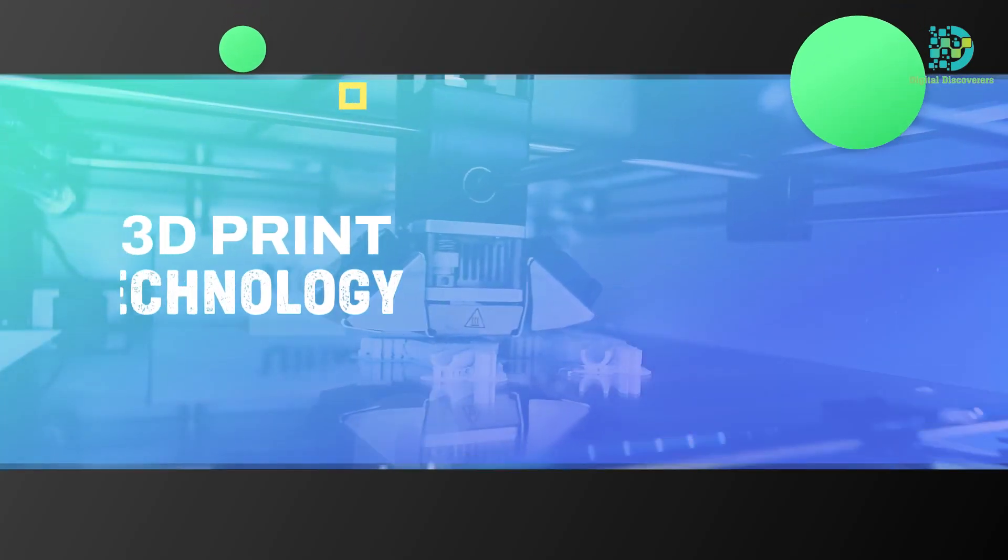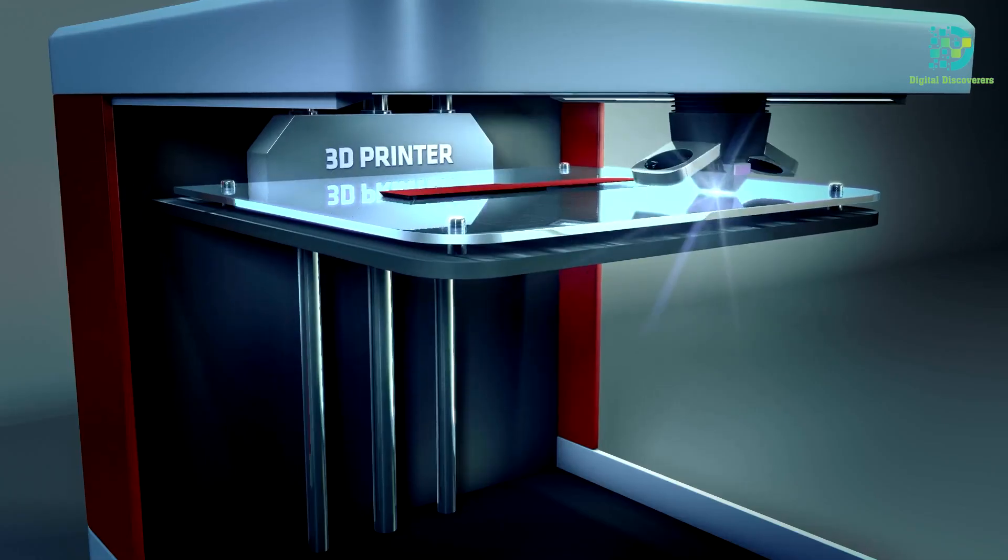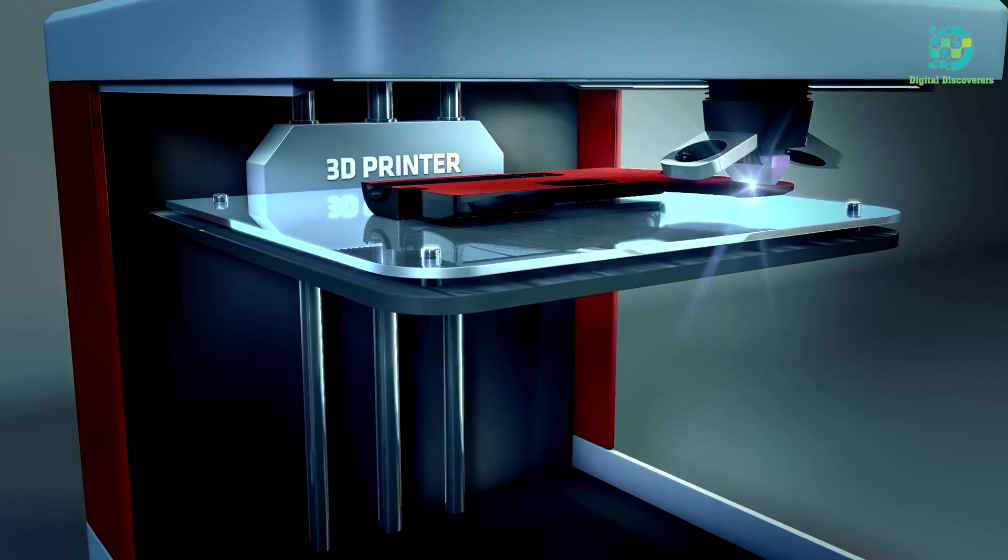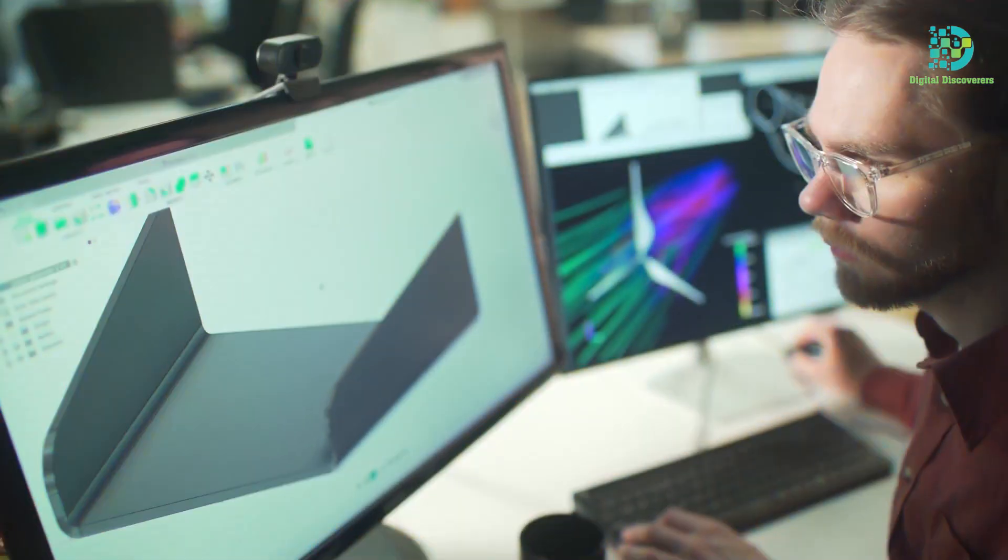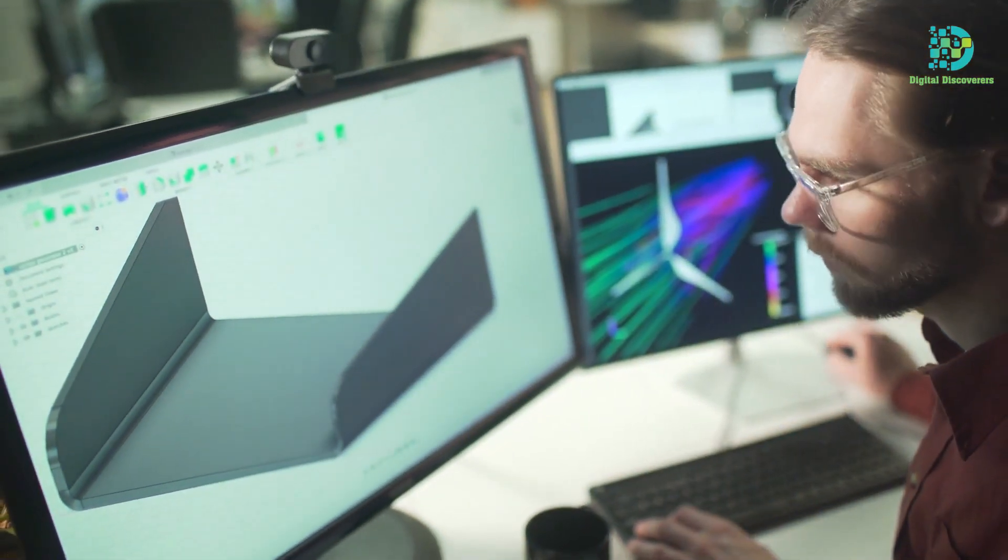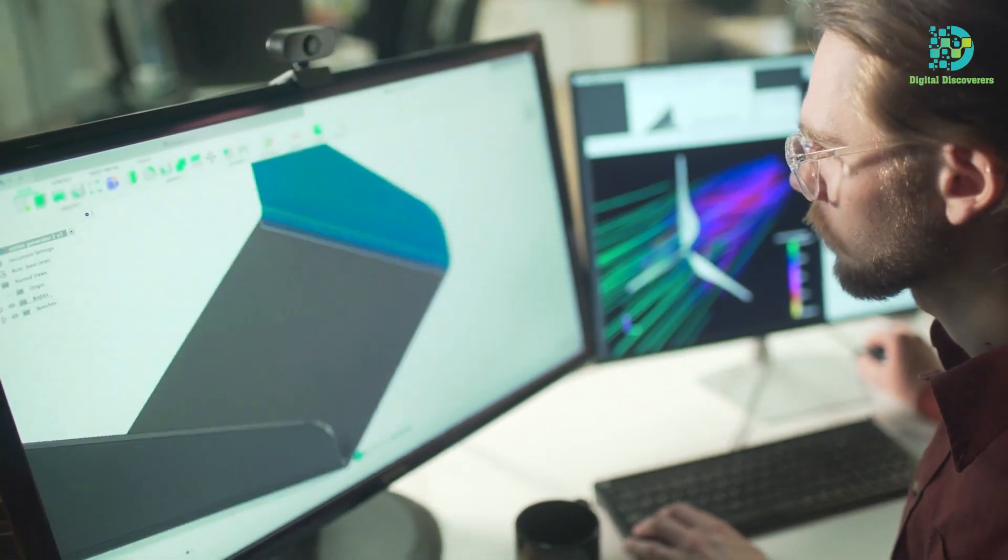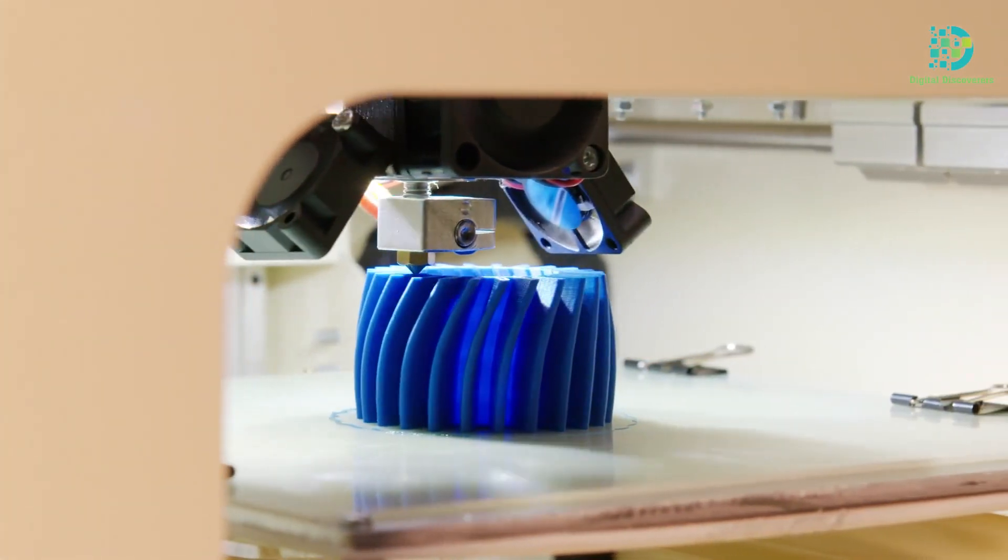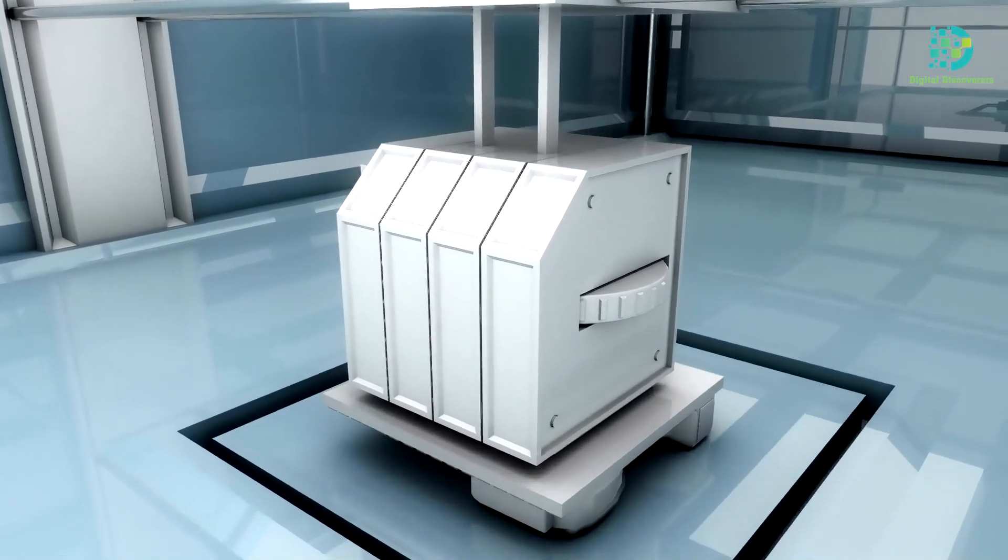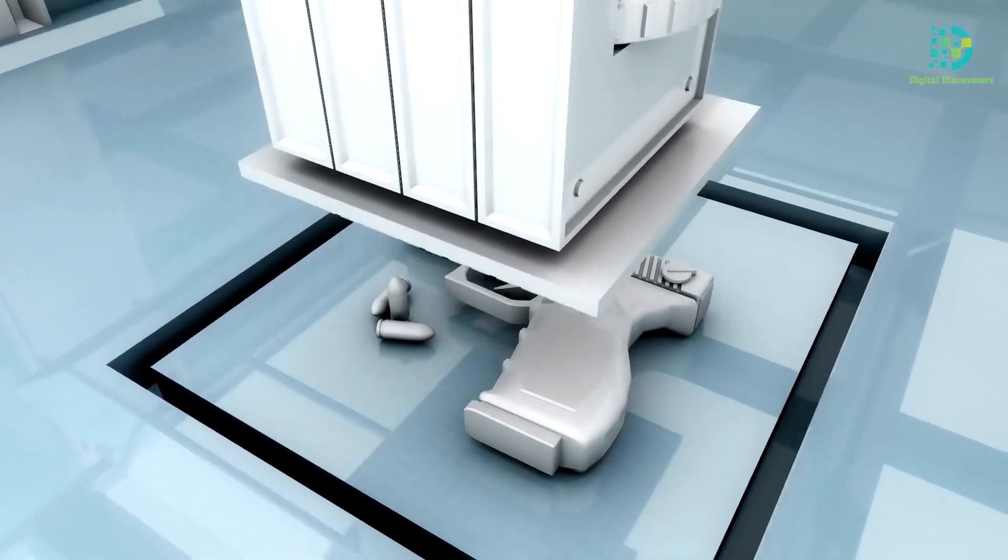3D print technology: By 2050, with 3D print technology, anything can be easily made by shaping it. For this, the CAD file of that part will have to be extracted from the internet by the computer, and in a while that part will be ready with the 3D printer. Due to the development of this technology, in the future the manufacture of many large objects and weapons will also become very easy.